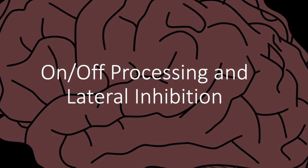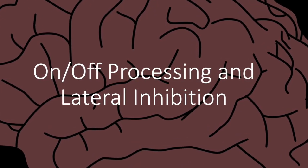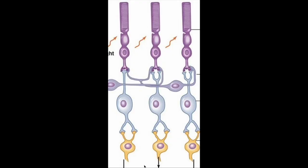This video talks about on-center, off-surround, and off-center, on-surround light processing as well as lateral inhibition. To understand this process, you have to first understand the connectivity of cells involved in photoprocessing.